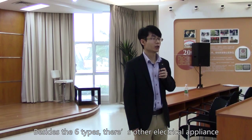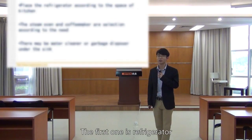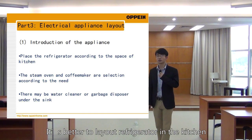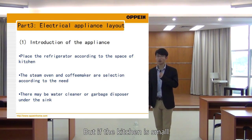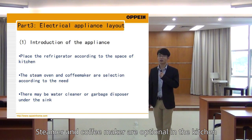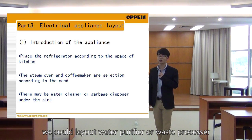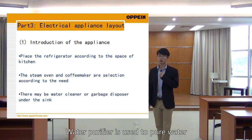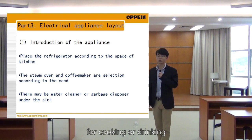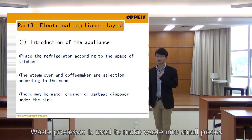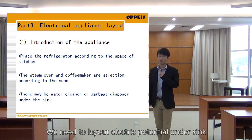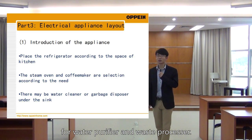Besides the six types, there are other electrical appliances. The first one is a refrigerator. It's better to lay out the refrigerator in the kitchen, but if the kitchen is small, we could lay it out outside the kitchen. Steamer and coffee maker are optional in the kitchen, depending on the needs of customers. Under the sink, we could lay out a water purifier and waste processor. Water purifier is used to purify water for cooking or drinking. Waste processor is used to break waste into small pieces. We need to lay out electrical outlets under the sink for the water purifier and waste processor.